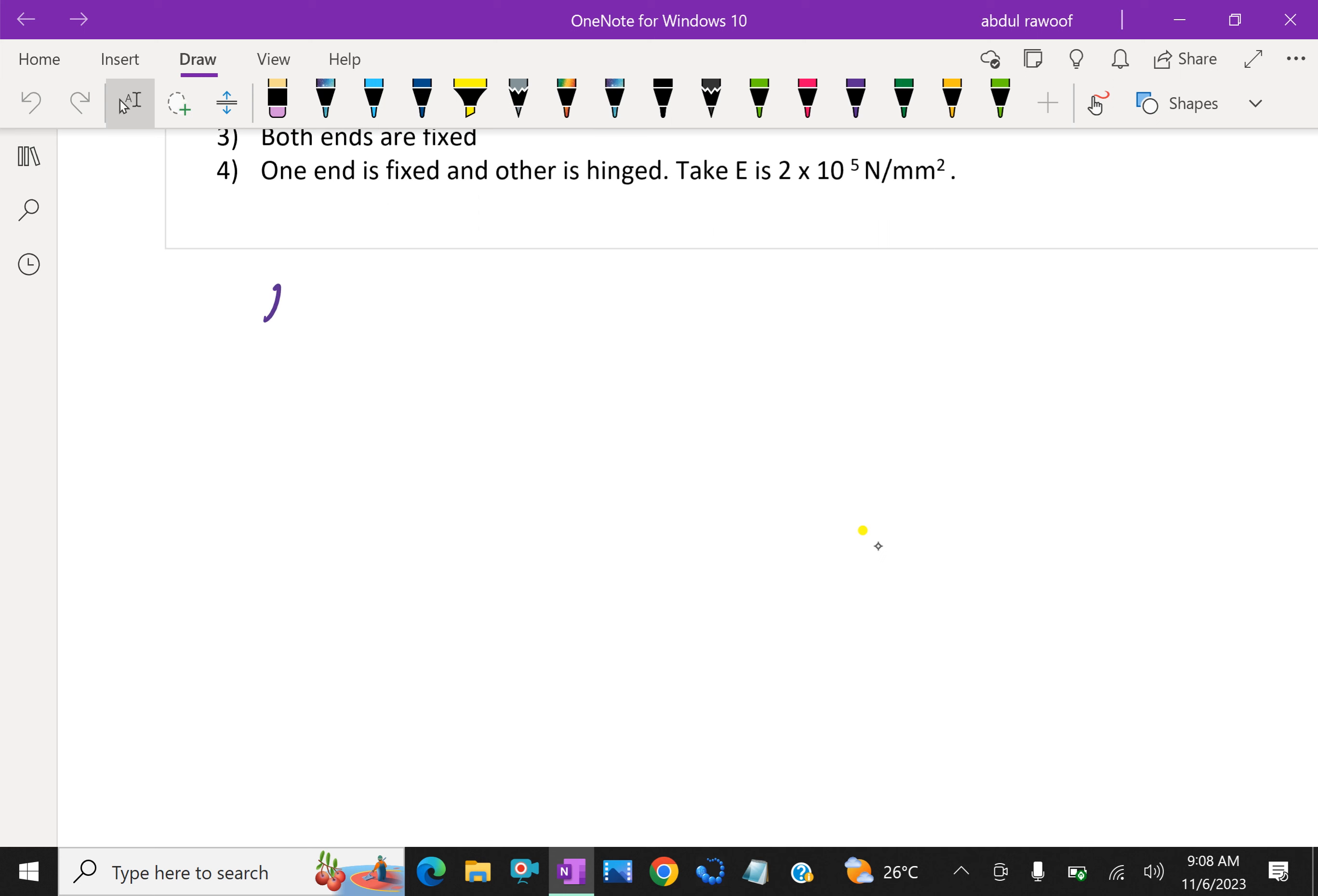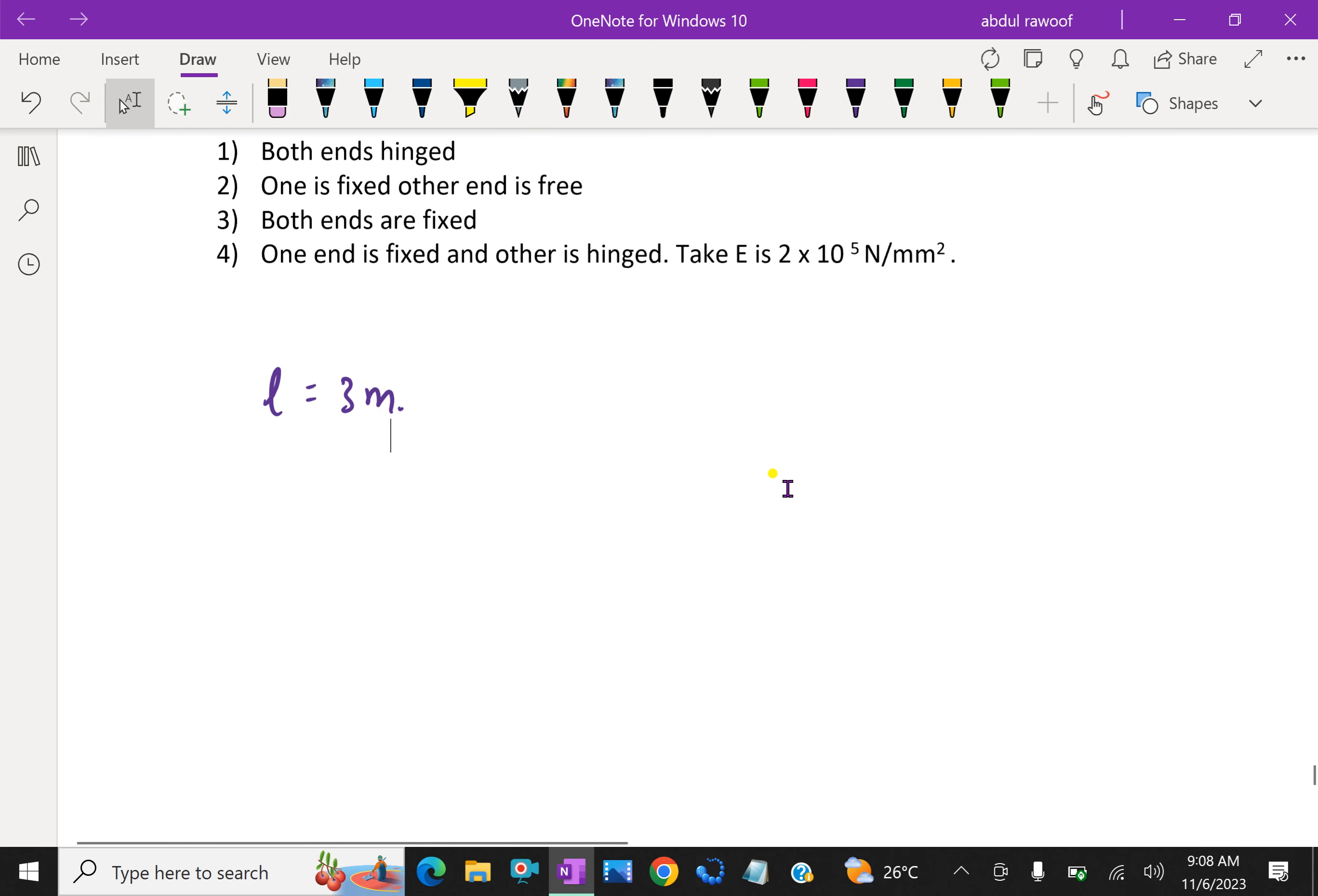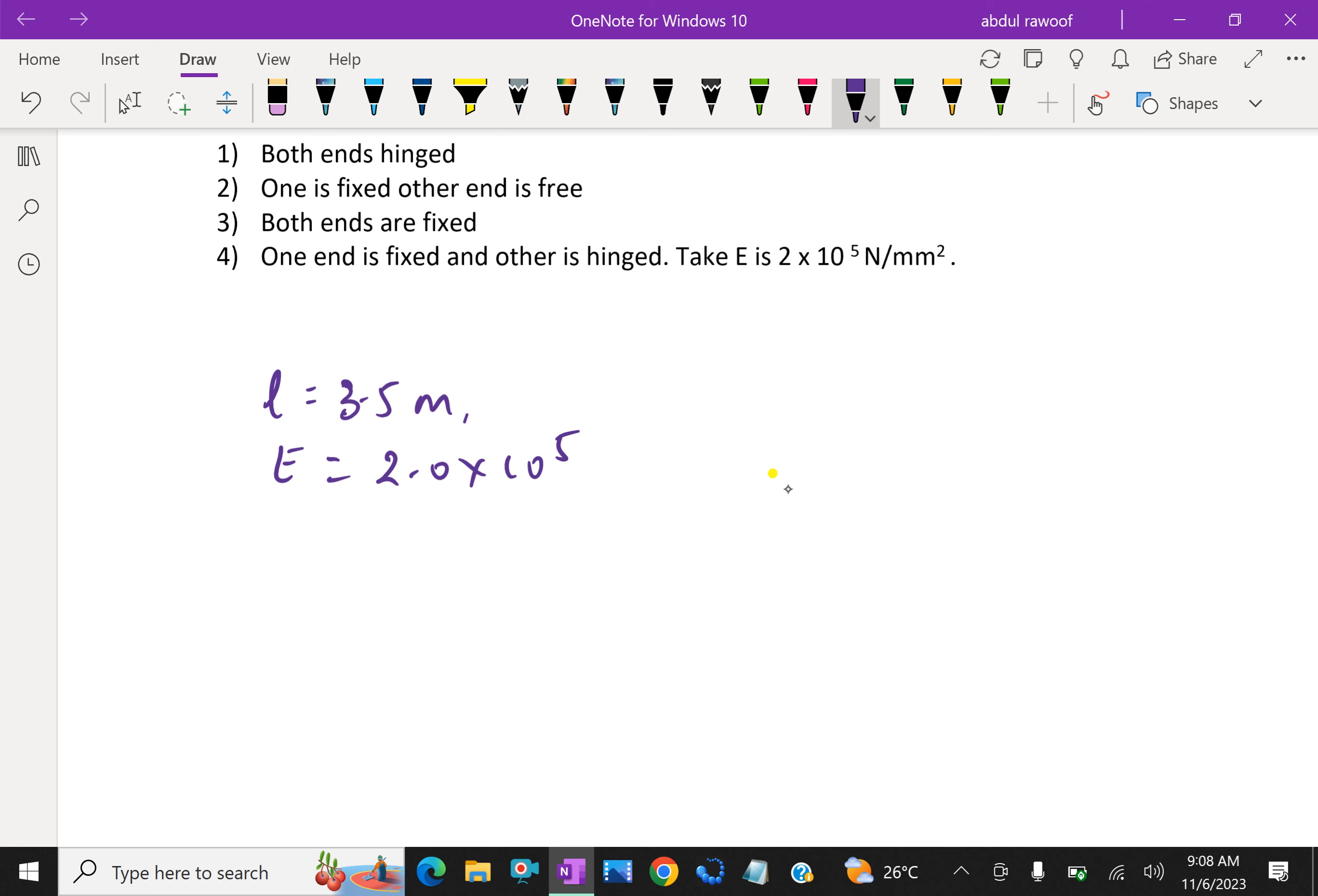First of all we write the given things. Length L of the strut is 3.5 meter. Then E, Young's modulus is equal to 2.0 into 10 power 5 Newton per mm square. And diameter is 6 centimeter, which is 60 mm.